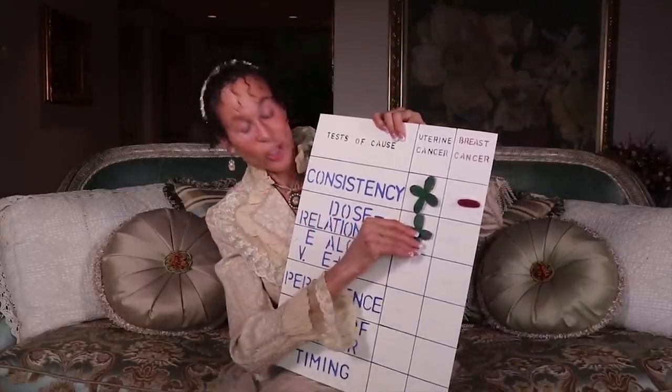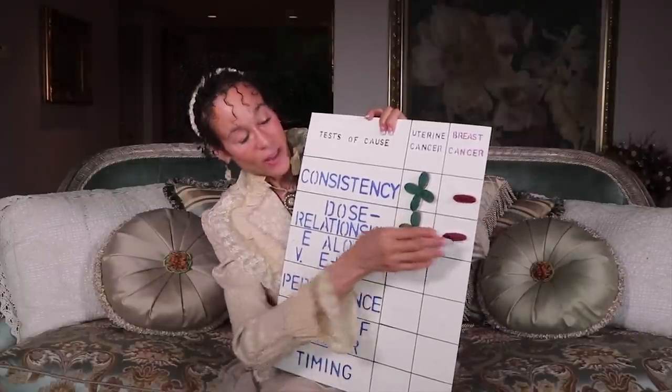The dose relationship test is next. For uterine cancer, there is an absolute dose-related effect between estrogen and uterine cancer. But that's not true with breast cancer — there is no dose-related effect between estrogen and breast cancer. Higher dosages of estrogen are not associated with higher rates of breast cancer. So estrogen passes the dose relationship test for uterine cancer, but it fails as a cause for breast cancer.